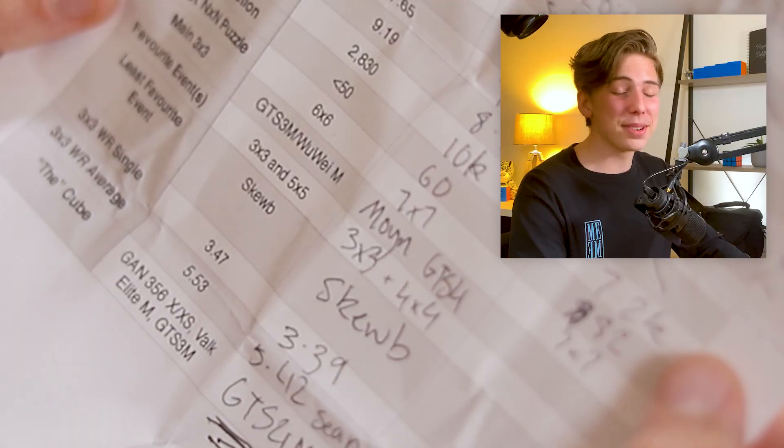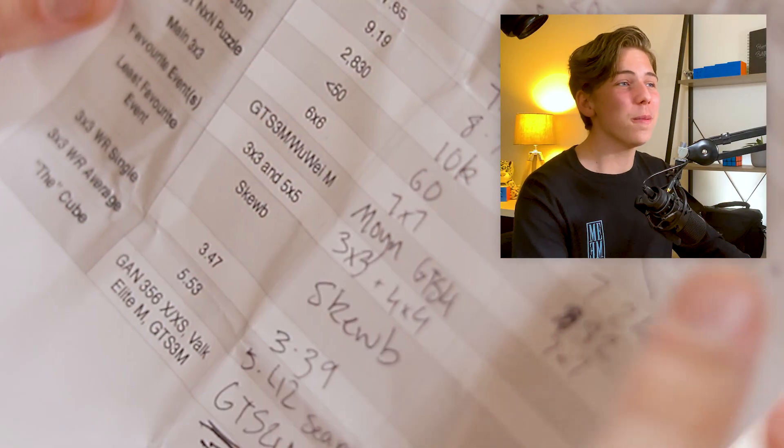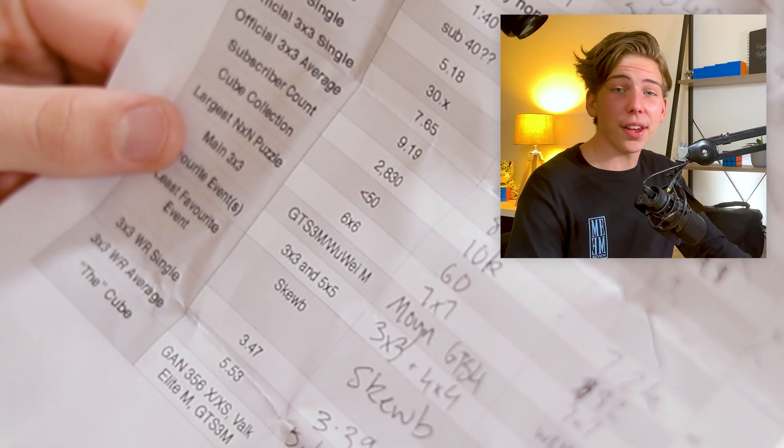Interestingly, I was maining the GTS3 and the Wuwei. I predicted that Moyu would have a GTS4, and I guess technically if you think about it, the WRM came from the GTS3 and the WRM 2020 is an improvement of the WRM, which is a GTS3, so that means the WRM 2020 is a GTS4. So I was right, I guess.